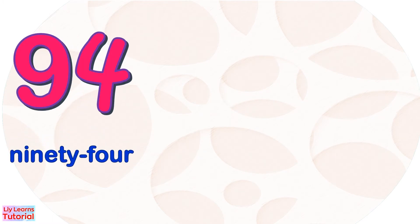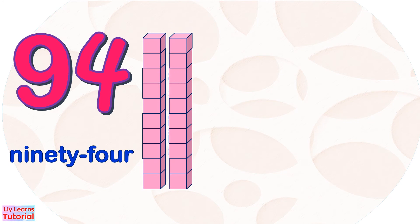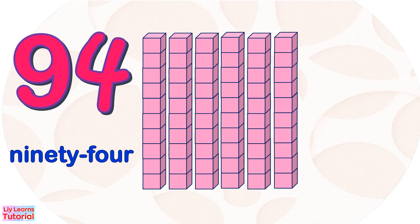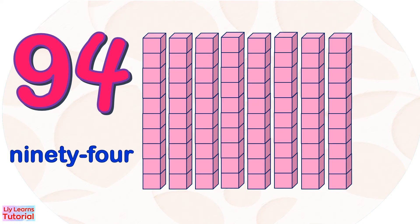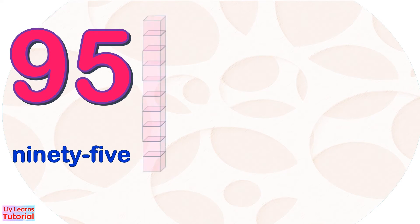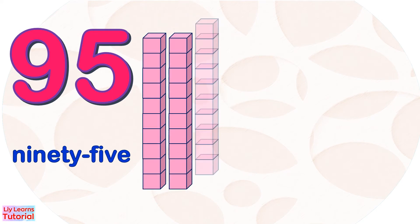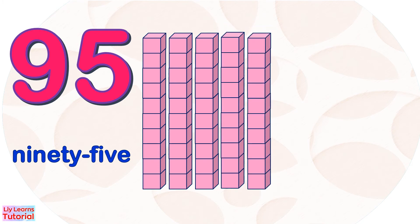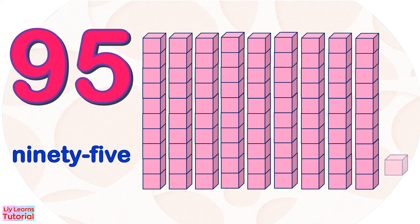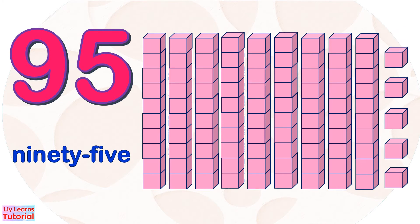Ninety-four. Ten, twenty, thirty, forty, fifty, sixty, seventy, eighty, ninety, ninety-one, ninety-two, ninety-three, ninety-four. Ninety-five. Ten, twenty, thirty, forty, fifty, sixty, seventy, eighty, ninety, ninety-one, ninety-two, ninety-three, ninety-four, ninety-five.